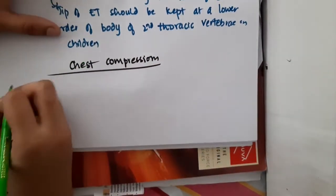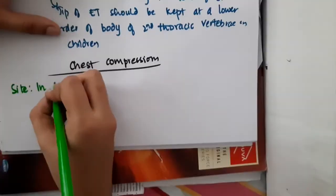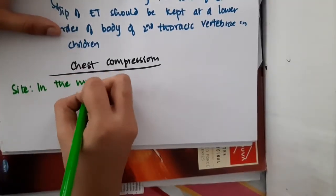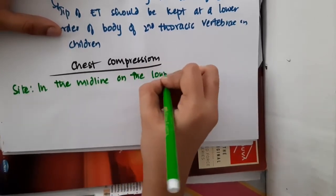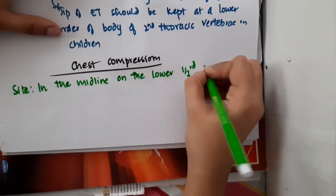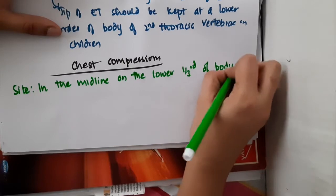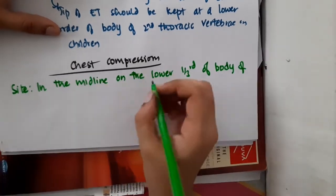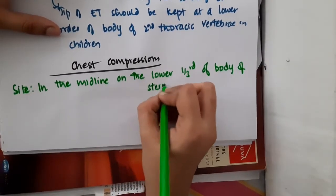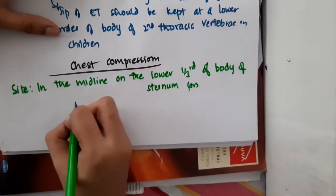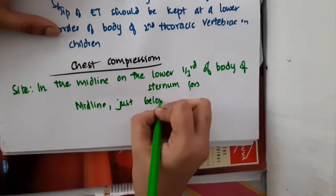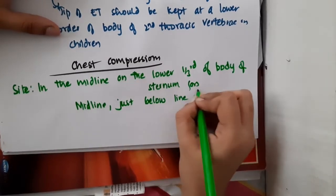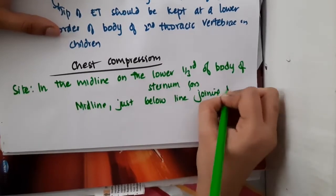Chest compressions should be done mainly in the midline on the lower one-third of body of sternum. They are done in the midline of the lower one-third of body of sternum, or you can also do them in the midline just below the line joining the two nipples.